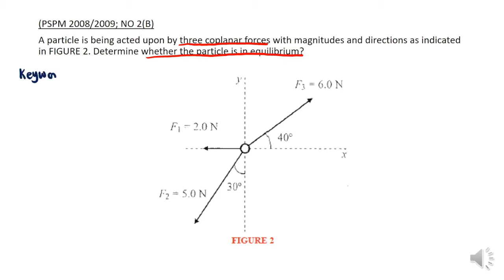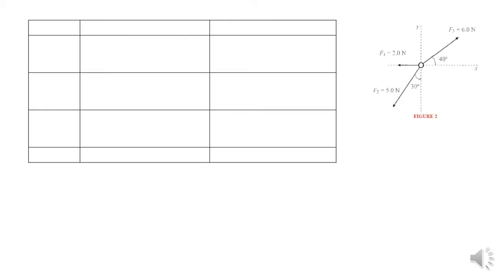We want to find if the particle is in equilibrium or not. The keyword equilibrium means that our F net must equal zero, so Fx must equal zero and Fy must also equal zero.